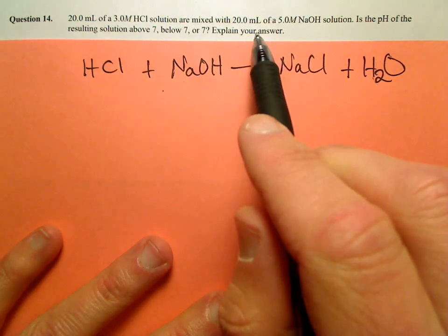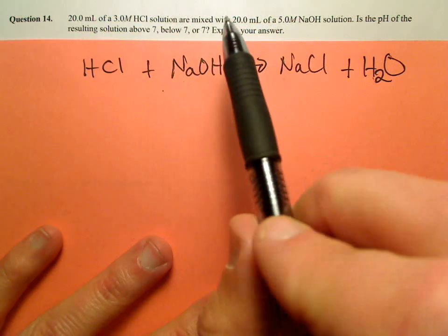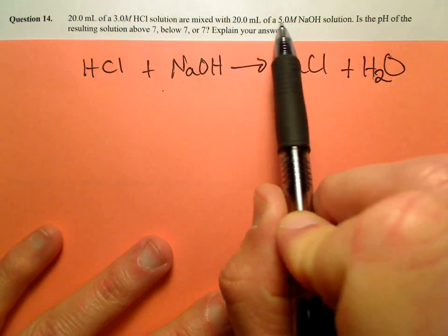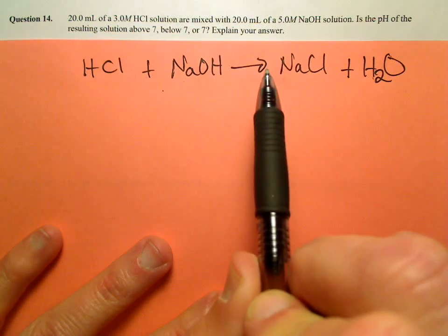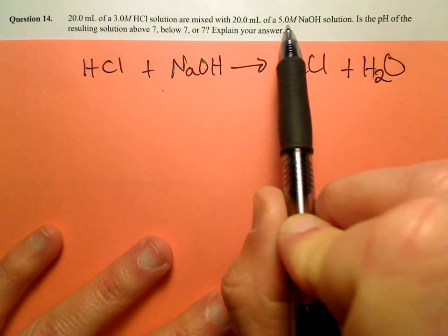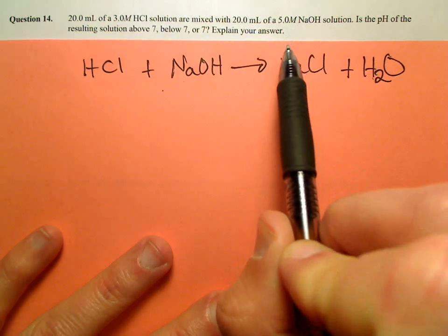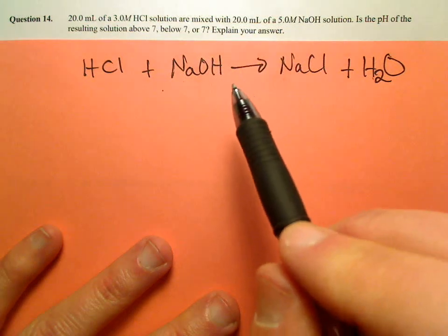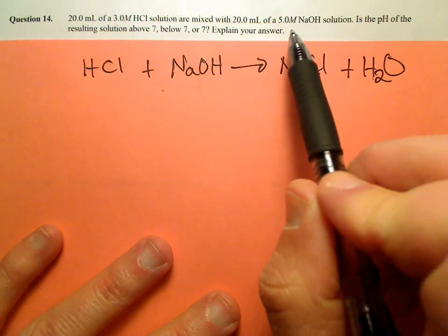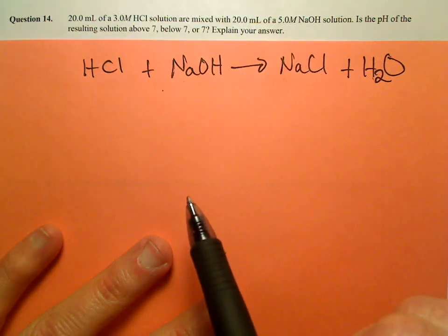The volumes are the same, 20 and 20, but notice the concentration of the sodium hydroxide is 5.0. So that means that even though the volumes are the same, the fact that the sodium hydroxide is more concentrated means that there's been more moles of sodium hydroxide added.